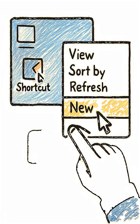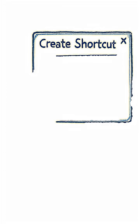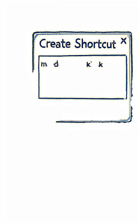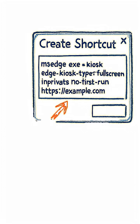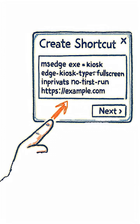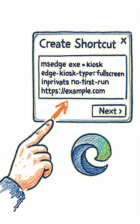Right-click the desktop and create a new shortcut. Point it to msedge.exe, then add a few commands: --kiosk, --edge-kiosk-type=fullscreen, --inprivate, and --no-first-run, followed by the website you want.